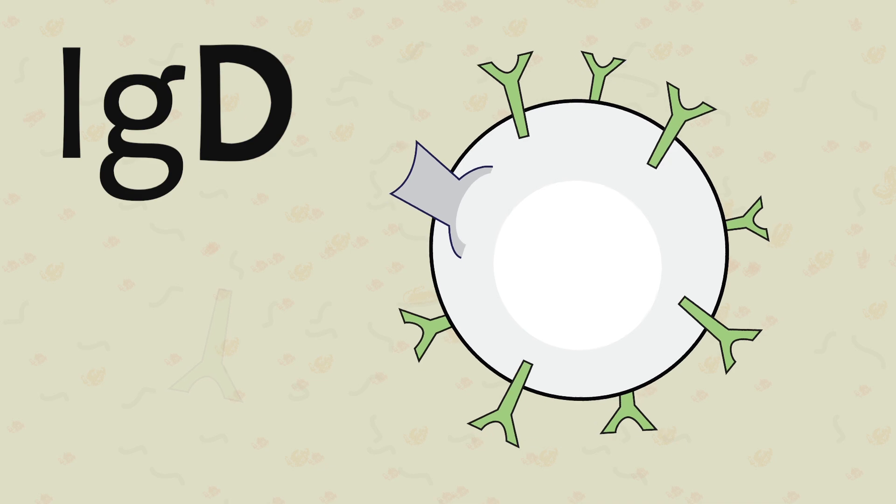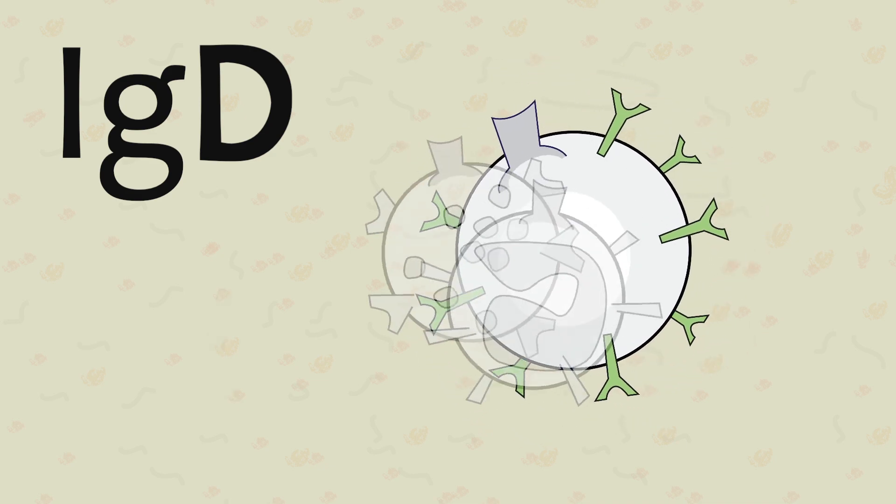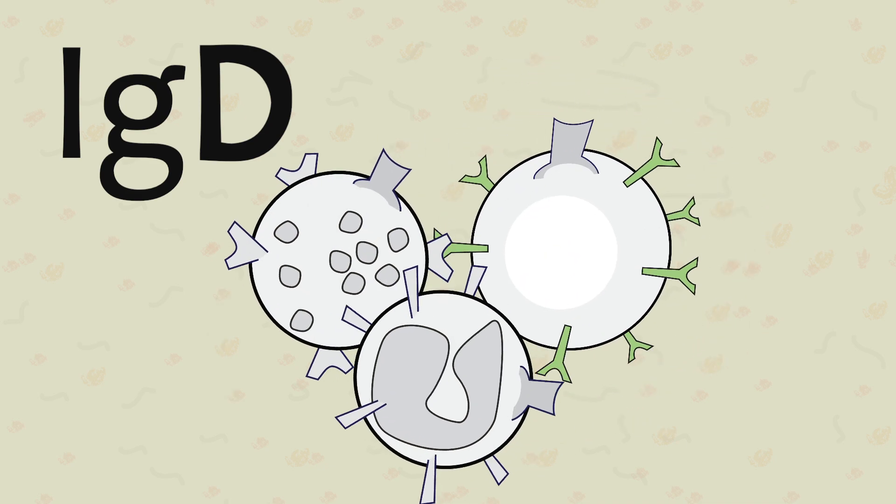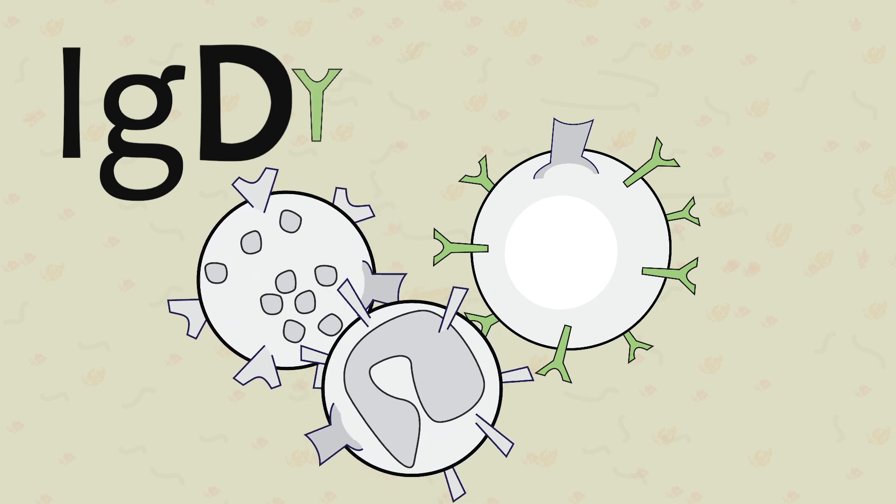IgD's are the least well-known antibody, however they are known to play a role in the activation of basophils and mast cells to attack invading microbes.